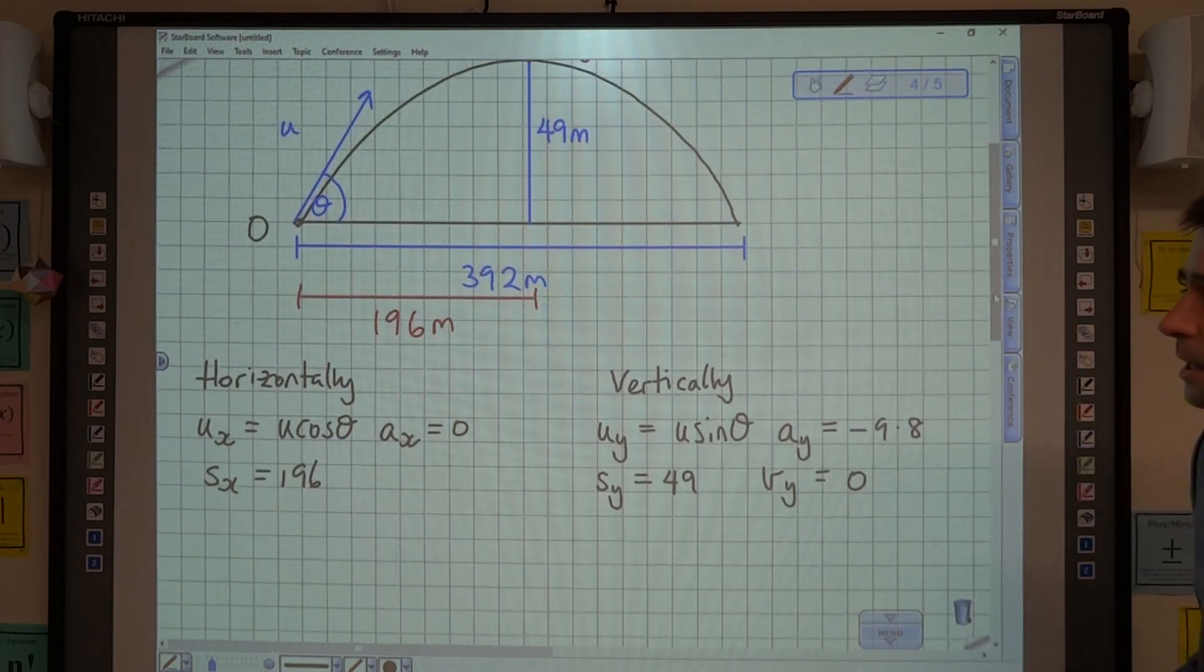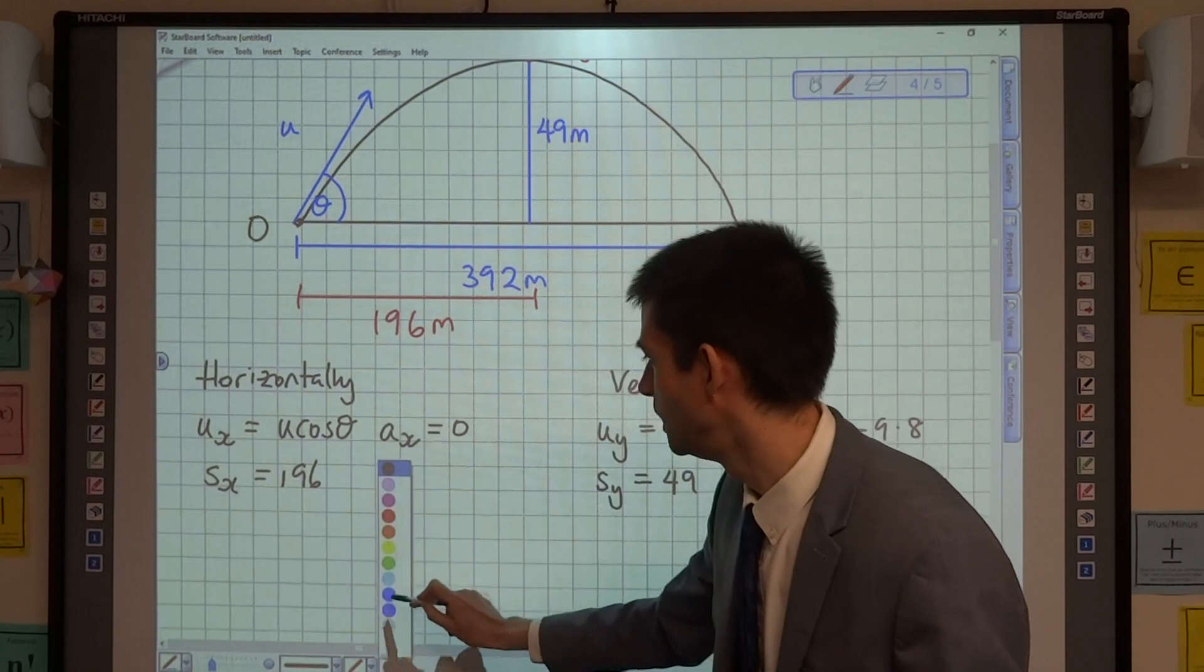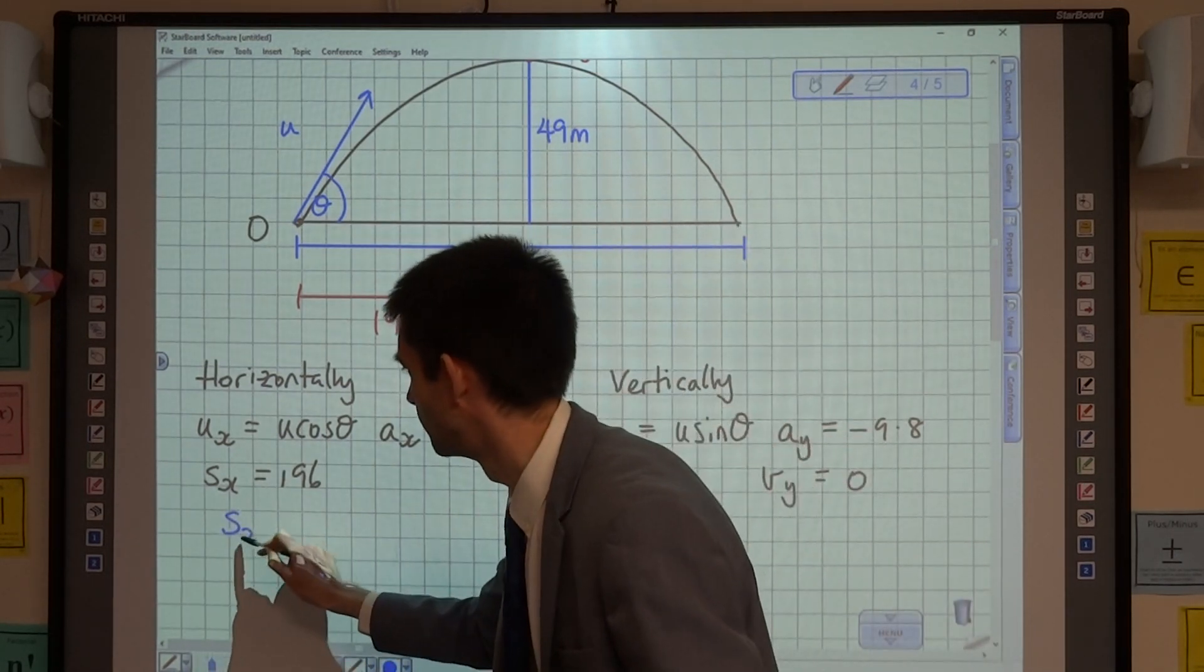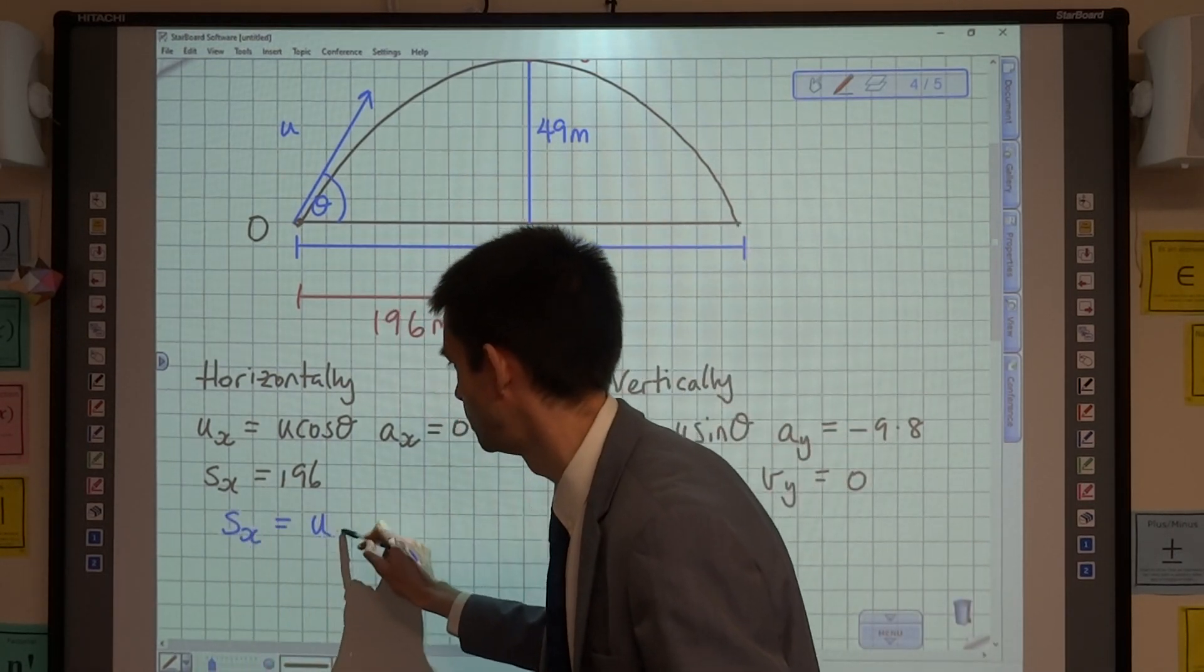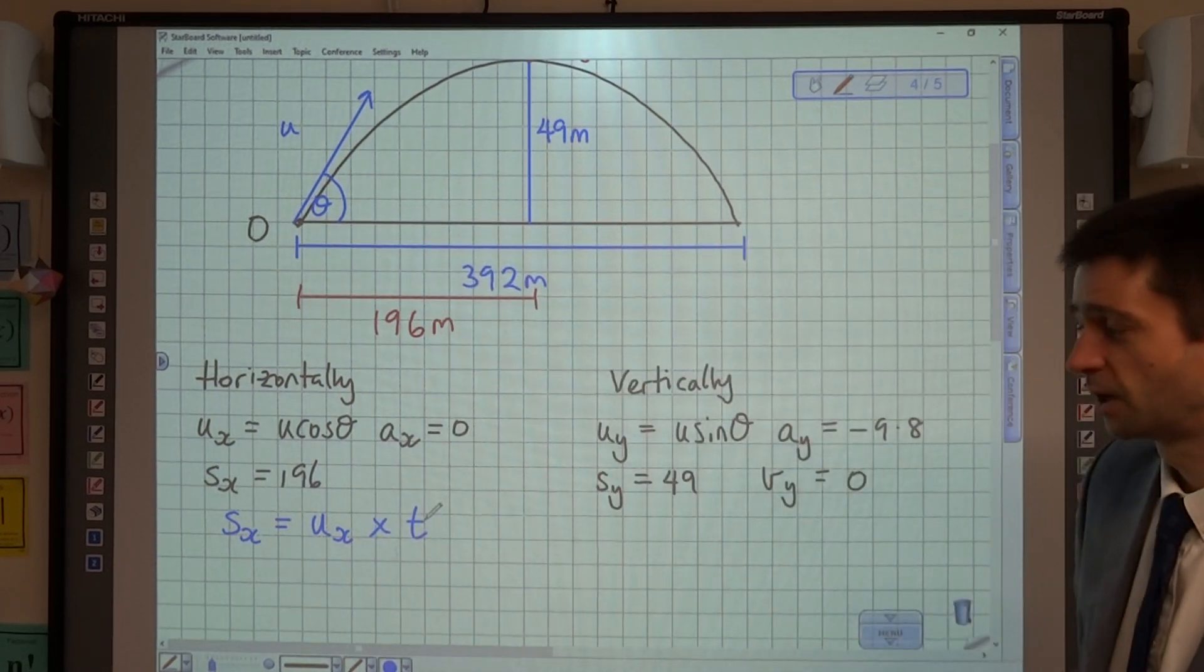Okay. So, let's have a think about what we can set up horizontally first of all. Well, we know that the displacement in the horizontal direction is just equal to the horizontal component of velocity multiplied by time.